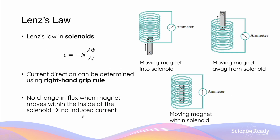Like Faraday's law, Lenz's law can be demonstrated using solenoids as well. When we move a bar magnet in or out of a solenoid, we will be inducing EMF in the solenoid and hence producing currents that can be detected by the ammeter. Lenz's law is more useful for explaining and accounting for the different directions of the current produced. If the magnet is moved towards the solenoid, the ammeter reading will be deflected in one direction, as opposed to when the magnet is moved away, the current direction is reversed, causing the ammeter reading to be deflected in the other direction. If the bar magnet is fully submerged within the solenoid, the solenoid does not experience any flux change, and hence there will be no induced EMF and no currents produced.